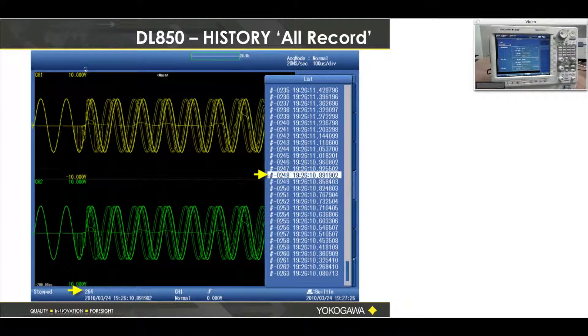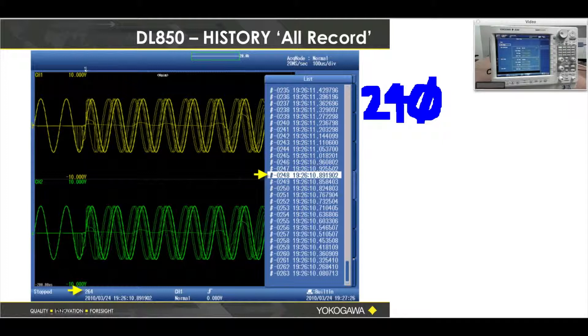Here's all records being displayed simultaneously. So in this case, I've got 240 acquisitions, or some large number of acquisitions, on the screen at the same time. It could be 2,000 acquisitions.